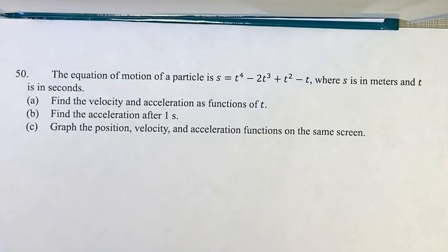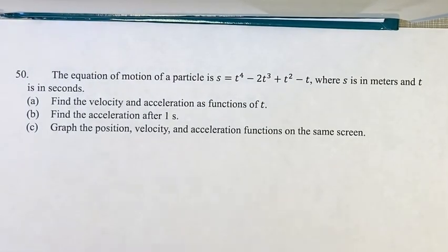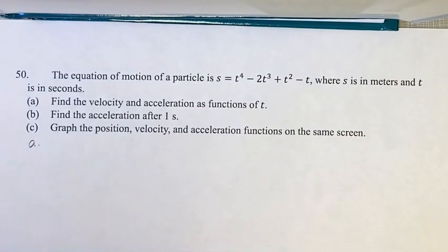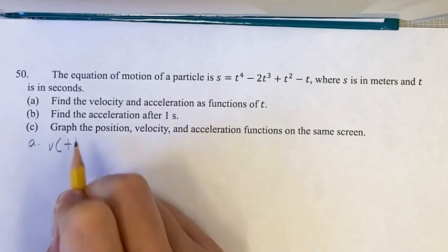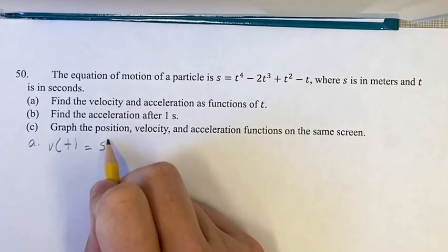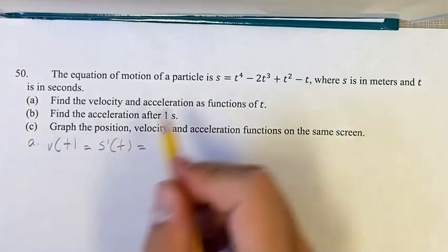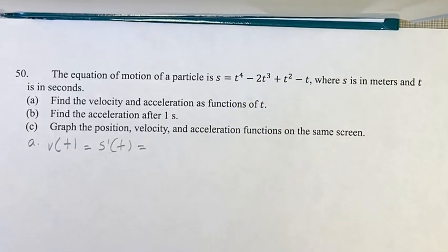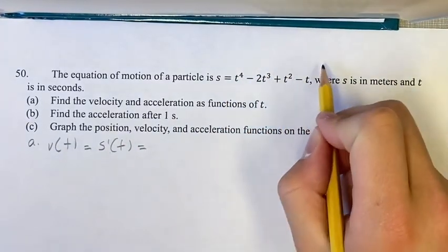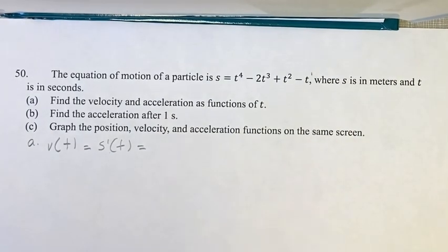So firstly, we're going to find the velocity and acceleration as a function of t. To do that, we have to understand that v, the velocity, is equal to the derivative of the position of the motion. So to find the velocity, we have to take the derivative of this function here. This is just four power functions, if you think of t to the one there. So we just have to do the same thing four times, add and subtract them all together, and we'll get our derivative.